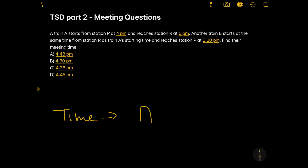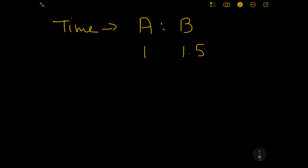We will be comparing the ratio of time taken by train A to train B. The time taken by train A is 1 hour, that is 4 PM to 5 PM, and the time taken by train B is one and a half hours, that is 4 PM to 5:30 PM. Since this is in decimals, I would convert this into a whole number, and this can be further written as the ratio of 2 is to 3. So the time is divided in the ratio of 2:3.